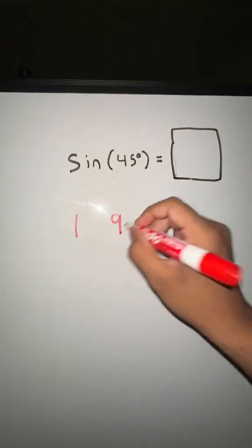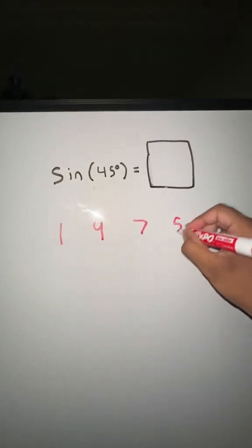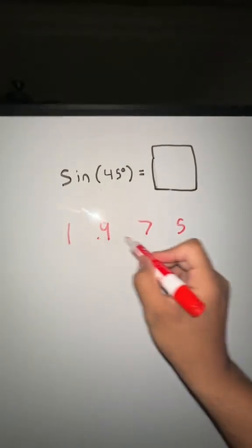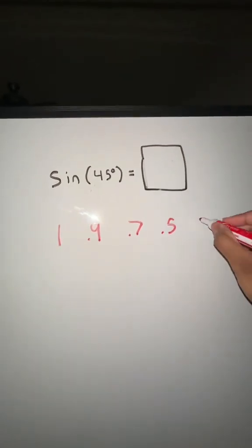There's this band called the 1975, which I hope you all know. And essentially this is one, it's going to be 0.9, 0.7, 0.5. So you're going to add a zero here as well.